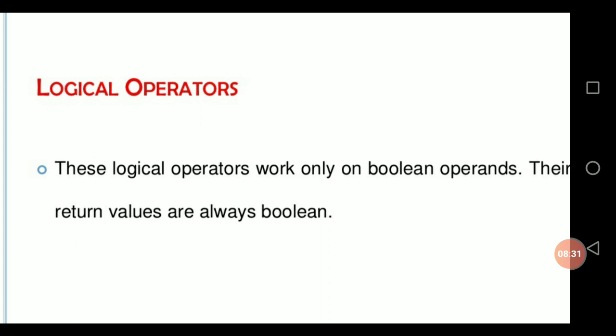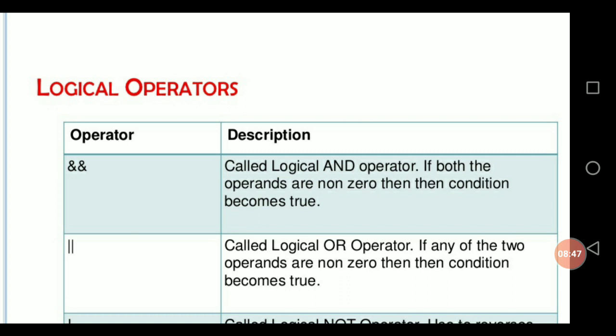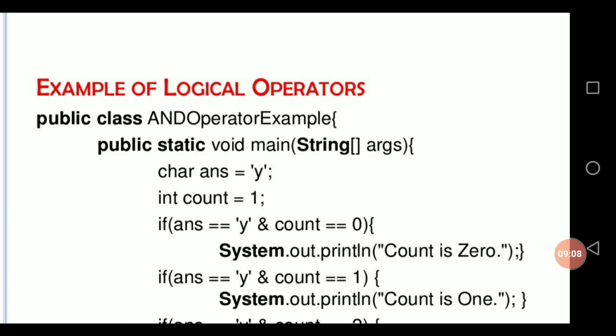The next operator is called logical operator. Logical operators are also called boolean operators. These operators produce either true or false boolean values. Here we are using three different logical symbols: double ampersand (&&) called logical AND, double pipe (||) called logical OR, and exclamation (!) called NOT. This is the example of AND, OR, and NOT processing.